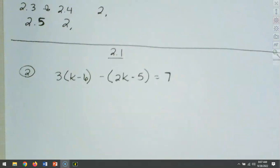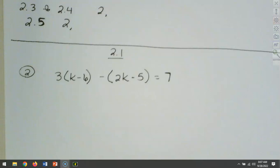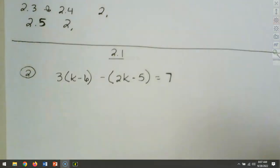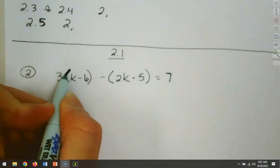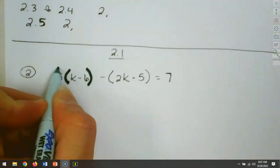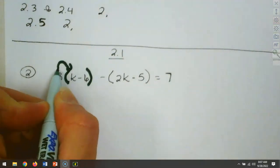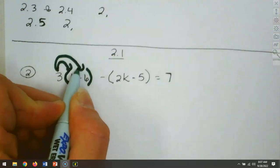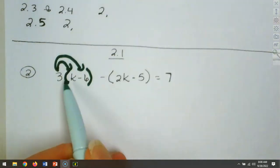Remember the order of operations — parentheses always go first. So the first thing we need to do is clear out our parentheses. The parentheses tell us where to stop when we use the distributive property. So the first thing I'm going to do is distribute the 3 through, stopping at the 6. You don't go any further than that.